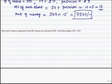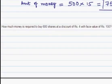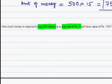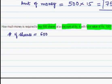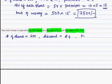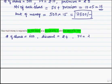Let us see another problem. How much money is required to buy 600 shares at a discount, where the face value is Rs 100? In the earlier problem it was a premium; here it is a discount. So number of shares to be bought is 600, discount amount is Rs 4, and face value is Rs 100.